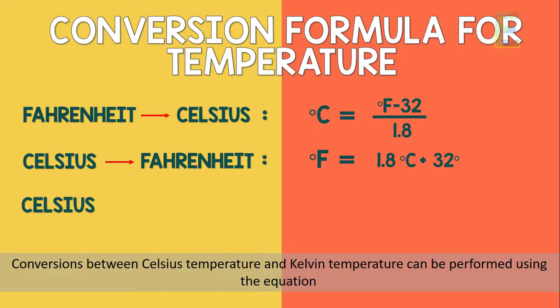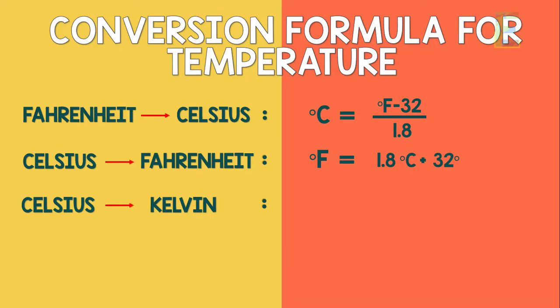Conversions between Celsius temperature and Kelvin temperature can be performed using the equation Kelvin is equal to degree Celsius plus 273.15.